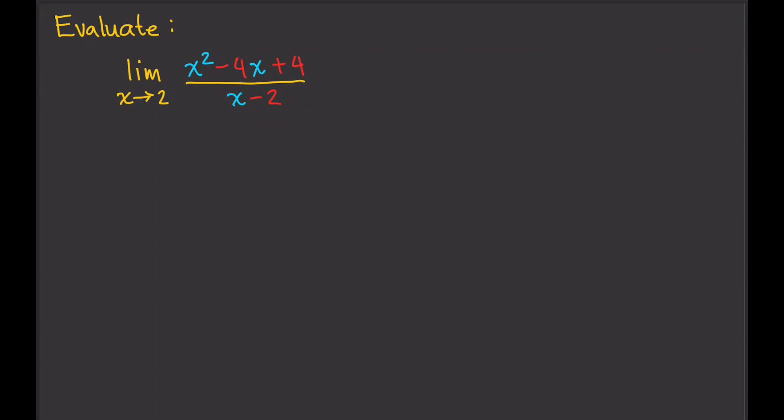Evaluate the limit of x squared minus 4x plus 4 divided by x minus 2 as x approaches 2. In the previous video, you may have learned that you don't need to religiously follow the limit theorems to evaluate a limit — you can just simply substitute the value for c for x and then solve.